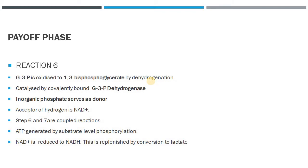Whatever ATP was utilized in the preparatory phase will be produced in the payoff phase. Importantly, NAD+ is reduced to NADH here, and this NAD+ must be replenished — which is why this step is coupled with lactate formation under anaerobic conditions of glycolysis.